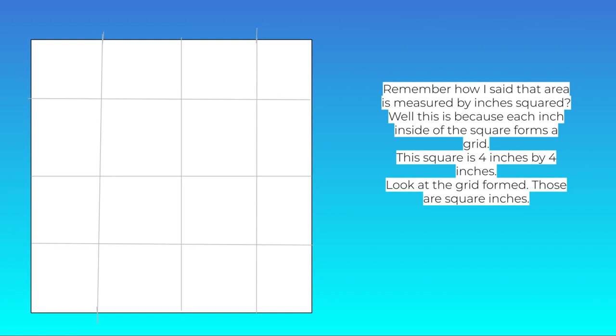Remember how I said that area is measured by inches squared? Well, this is because each inch inside of the square forms a grid. This square is 4 by 4 inches. Look at the grid formed. Those are the square inches.